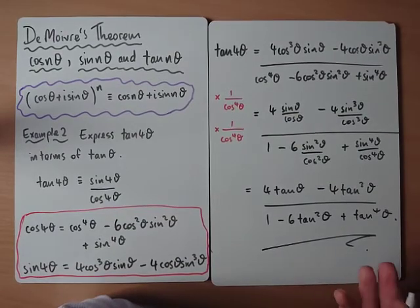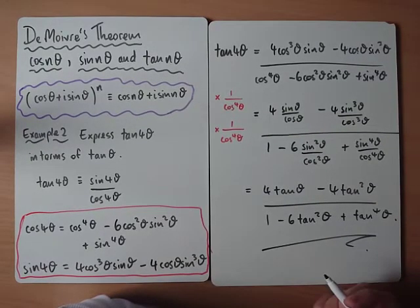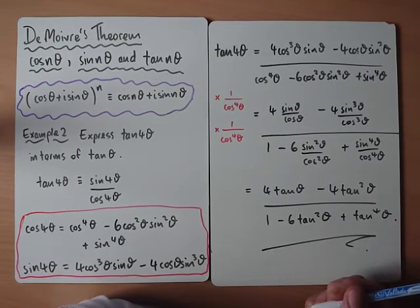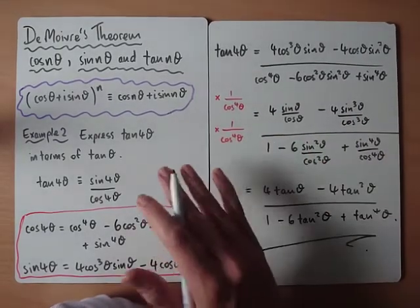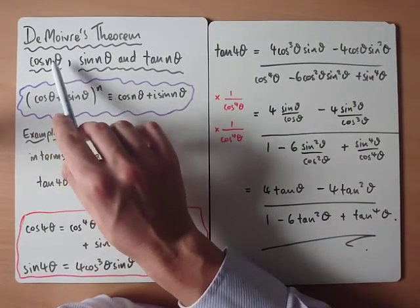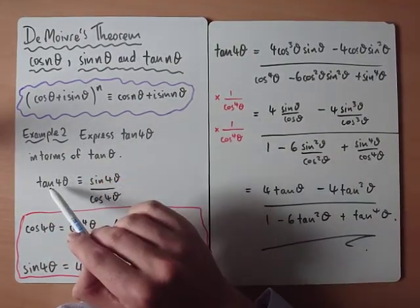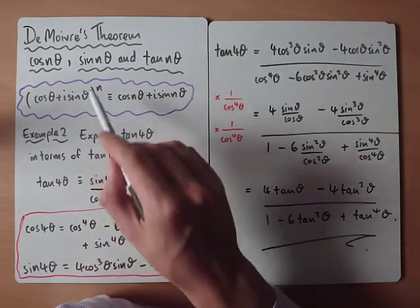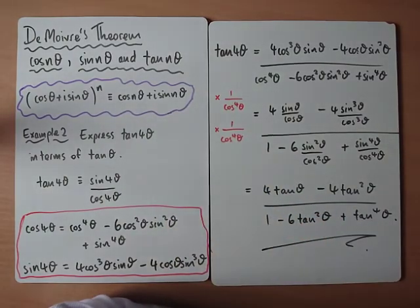We could be asked about tan 5θ or sin 5θ — the expansions just get bigger. The most you'd be expected to do is probably up to the 5θ case in the exam. The key thing to remember is: if the question mentions finding cos nθ, sin nθ, or tan nθ — even if it doesn't explicitly mention De Moivre's theorem — this is the technique to use.